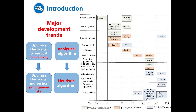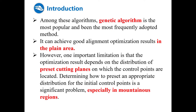Also, the optimization algorithms have changed from some exact mathematical algorithms to heuristic algorithms, such as the genetic algorithm and the particle swarm optimization, to name a few. In conclusion, among these existing algorithms, the genetic algorithm is the most popular and has been adopted by most researchers.